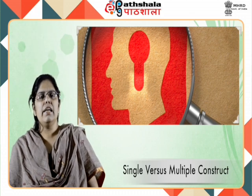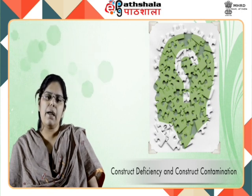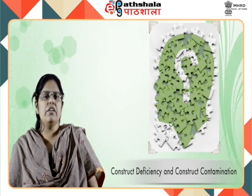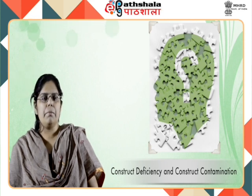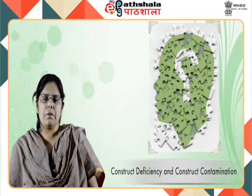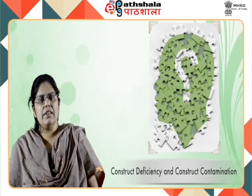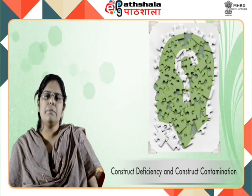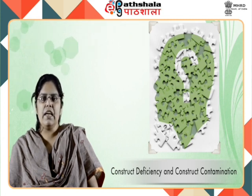Another thing to consider while identifying and operationalizing the construct is construct deficiency and construct contamination. A well-defined construct on which a test is to be developed should be devoid of deficiencies and contamination. In other words, a construct subjected to test development should be clean — one which evaluates what it is supposed to evaluate. Variables identified from the construct should precisely represent and measure that construct and nothing else. The variables may display two types of flaws affecting test validity: deficiency and contamination.